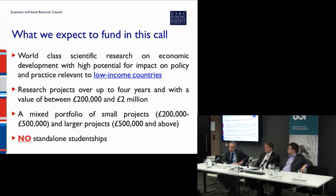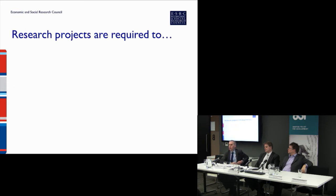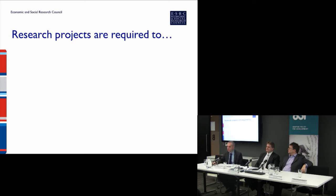What we will not fund under this call is standalone studentships, and that also relates to the 200,000 pound minimum. If you want to apply for a studentship, it has to be part of a larger research project. Students also need to receive their PhD from one of our 21 doctoral training centres. There is more detailed information on how to include studentships in the online documents.